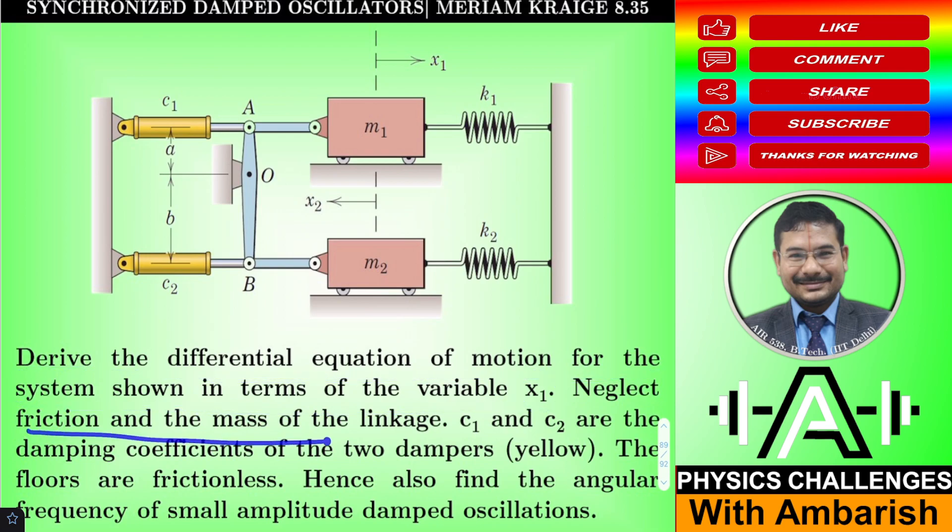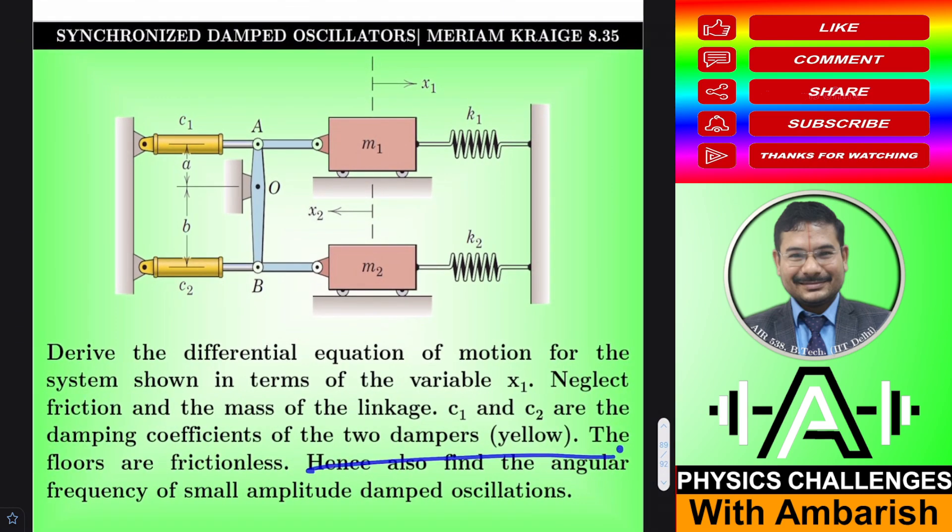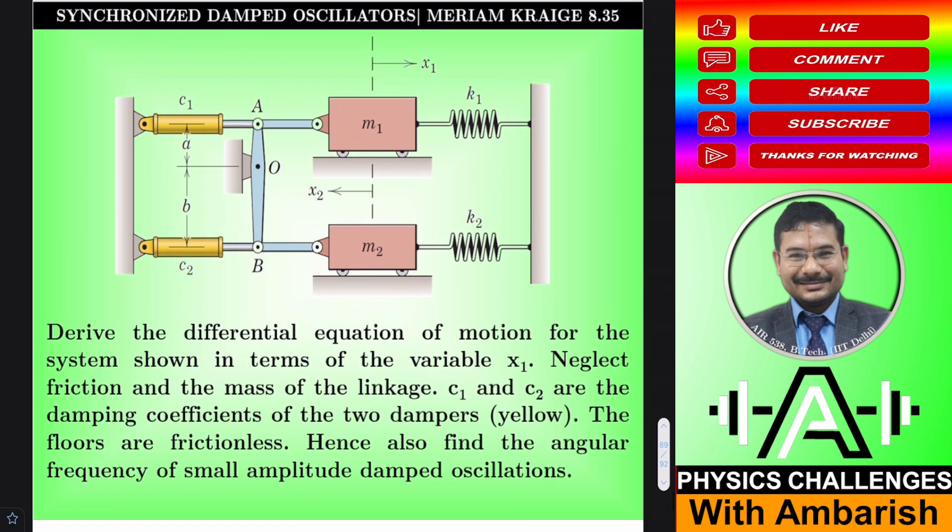So that's what the question is, derive the differential equation of motion for the system shown in terms of variable x1. Neglect friction and the mass of the linkage, so this is massless linkages. C1 and C2 are the damping coefficients of the two dampers which are shown in yellow, these two are dampers. The floors are frictionless. Hence also find the angular frequency of small amplitude damped oscillations, this part would be trivial once you have the differential equation. So if you want you can give it a try, I'll get into my analysis right away.